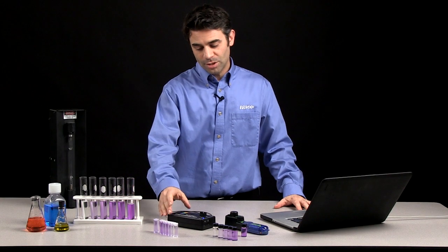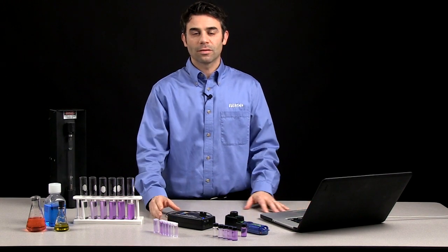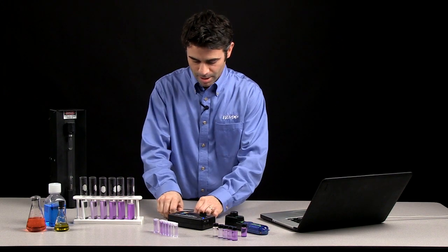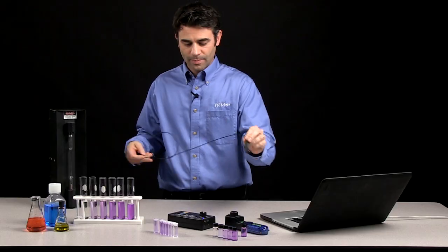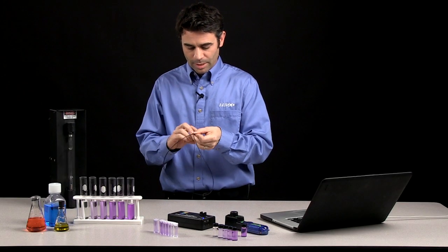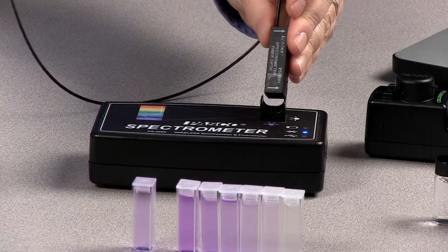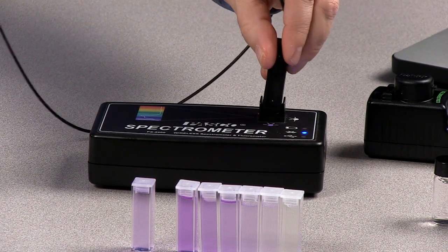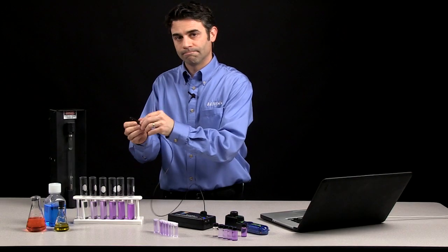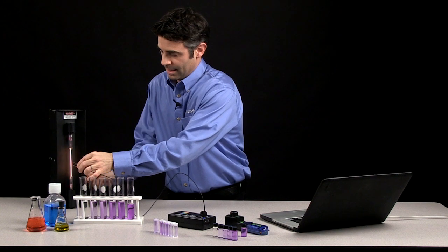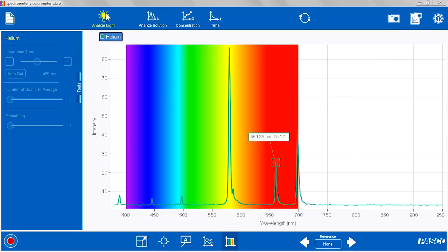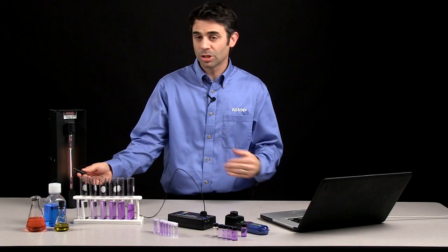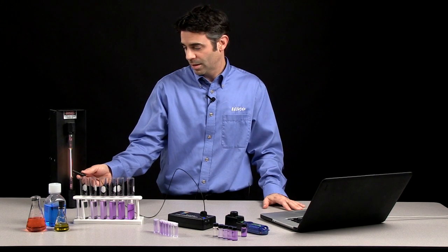There's an additional feature for the spectrometer that takes advantage of the fact that it is a full spectrum analysis. You can use the optional fiber-optic accessory cable, put it into the sample holder, and point that at light sources. And by doing that, looking at helium, I can go to the Analyze Light page, and I can look at the full visible spectrum of the emission of that particular element.